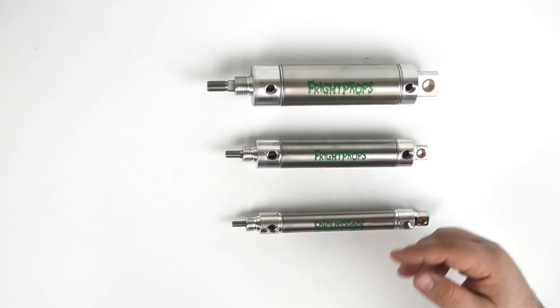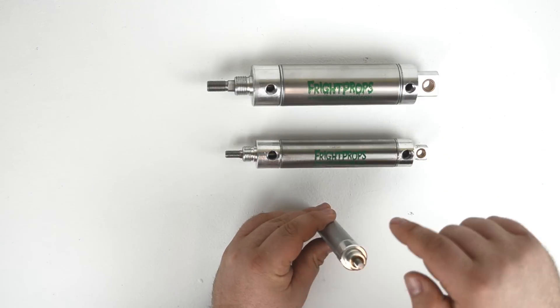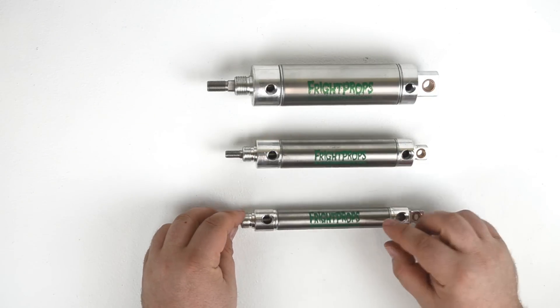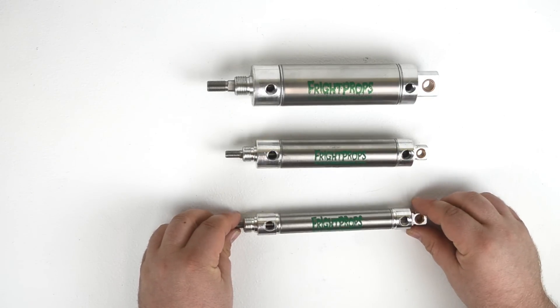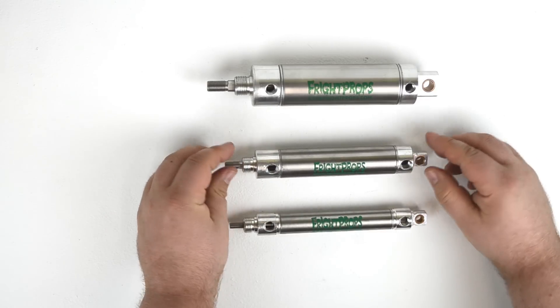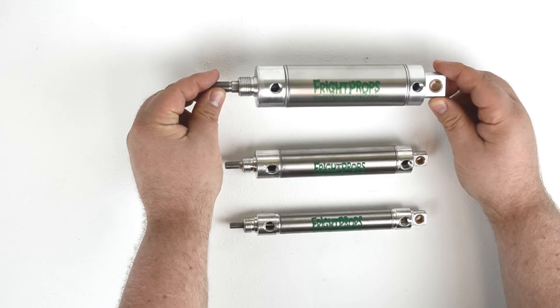The second term you often hear is bore. Bore refers to the diameter of the cylinder. We have three different bore sizes here. This is a three quarter inch bore cylinder. This is a one and one sixteenth inch bore cylinder. And this is a one and a half inch bore cylinder.